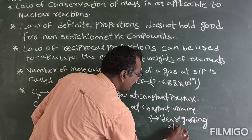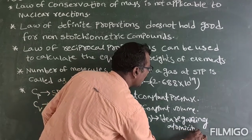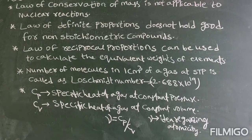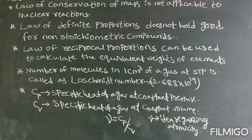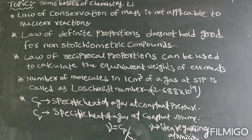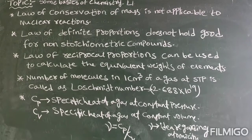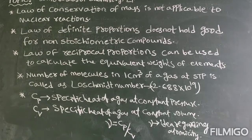What is atomicity? Atomicity refers to the number of atoms present in a particular molecule. Gamma gives information regarding atomicity.